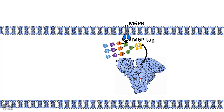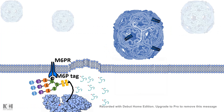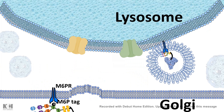There are specific receptors called mannose-6-phosphate receptors present in the membrane of the trans-Golgi network that sort out these proteins. The mannose-6-phosphate receptor and the mannose-6-phosphate tag interact at a pH around 6 to 6.5. Once this interaction happens, several triskelion molecules attach and a clathrin coat is assembled, forming clathrin-coated vesicles that are delivered to the lysosome.